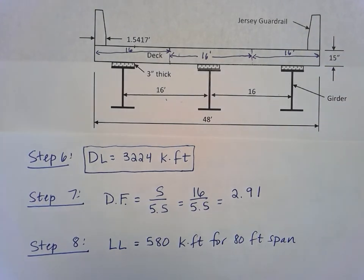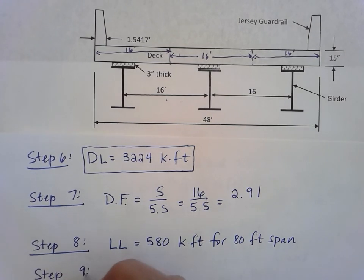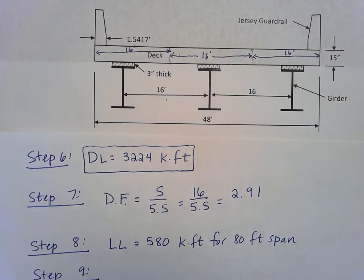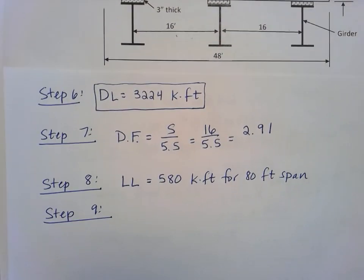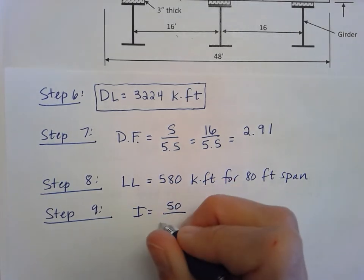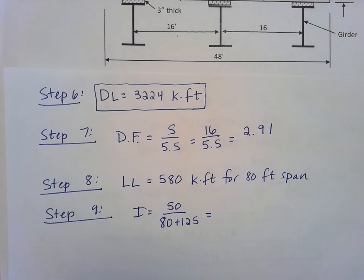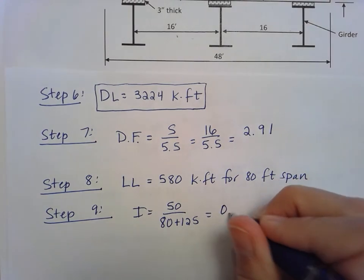Step nine is the impact factor. We can use that same equation we were using for our shear loading for a factored reaction. The impact factor is 50 over the span length, which in this case is 80 plus 125, and so we get an impact factor of 0.24.